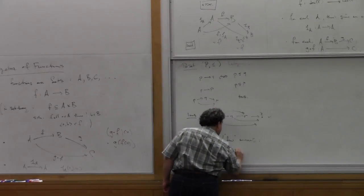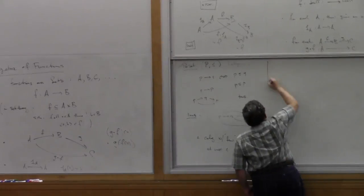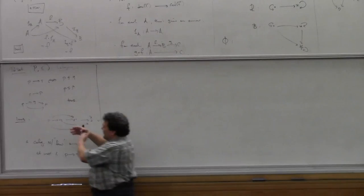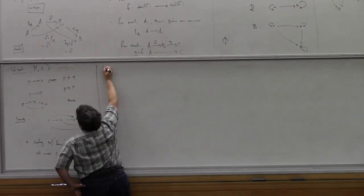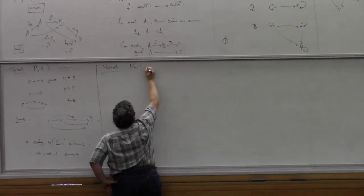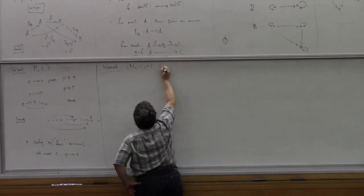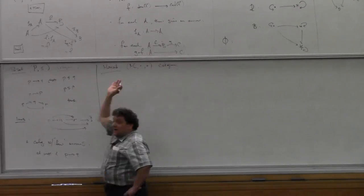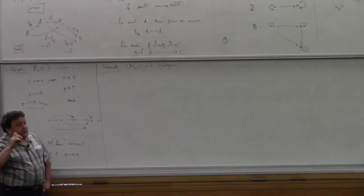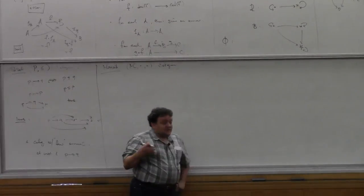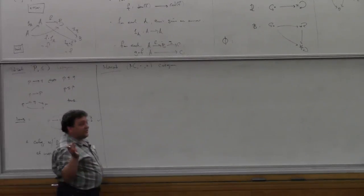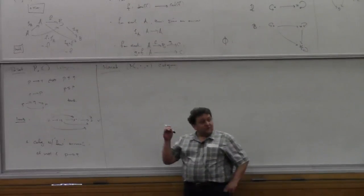A complementary phenomenon is a category with very few objects and lots of arrows. Take a monoid M with a multiplication operation and a unit element, and make it into a category. We put in one formal object. The elements of the monoid become arrows on that formal object. Because every arrow has the same domain and codomain, any two things are composable, and the composite of M and N is given by the monoid multiplication.